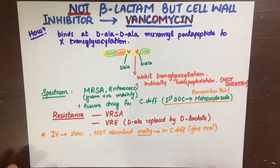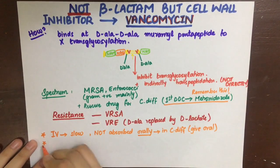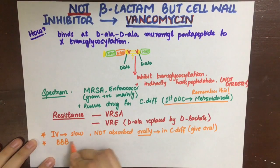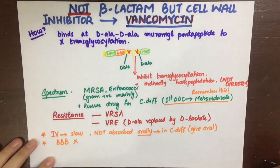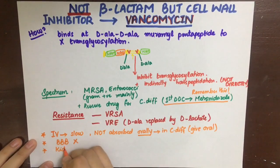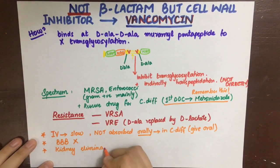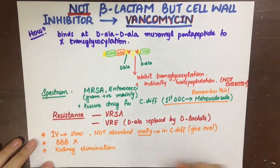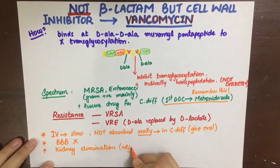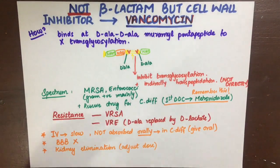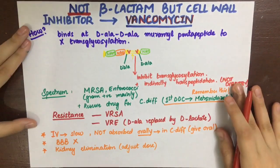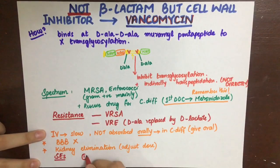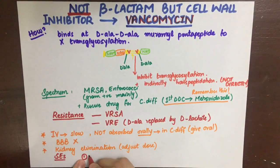The IV infusion should be slow; if it is fast, it can cause a shock-like state called red man syndrome. Vancomycin cannot cross the blood-brain barrier, and its elimination is via the kidney, so we need to adjust its dose in renal patients. The side effects include red man syndrome, which is a type 1 hypersensitivity reaction due to histamine release.